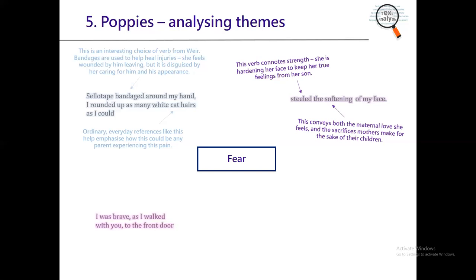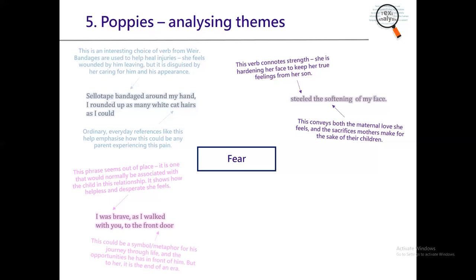I was brave as I walked with you to the front door. What's really interesting here is the phrase 'I was brave' — it seems out of place. It's a phrase normally associated with the child in a mother-child relationship, and the fact that she uses it about herself shows how helpless and desperate she feels. She has had the role of protector and carer taken away from her, and now she's having to be the one who puts a brave face on. The front door itself could be a symbol for the journey through life and the opportunities her son has in front of him — he opens it and steps into his new life, but to her, that door is shutting, and she's on the other side. It's the end of an era.